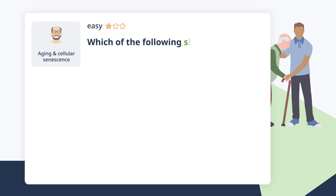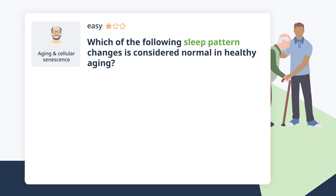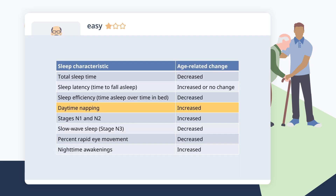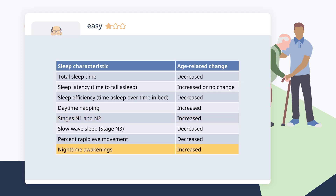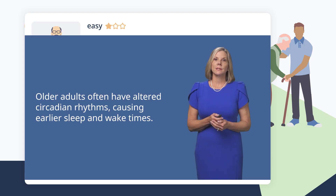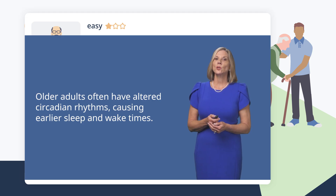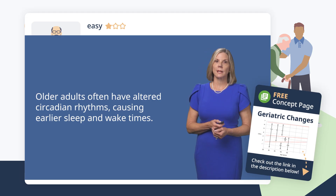Which of the following sleep pattern changes is considered normal in healthy aging? Changes in sleep architecture include reduced deep sleep — that's slow wave sleep — increased light sleeping (stage one and two), and more frequent awakenings. Older adults often experience changes in their circadian rhythm, called a phase advance, which can lead to earlier sleep onset and awakening times.